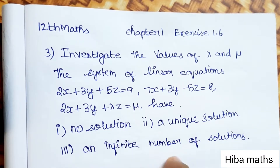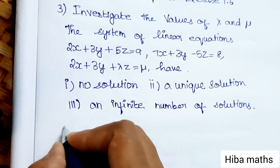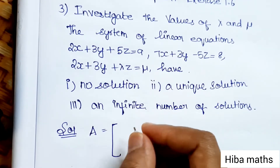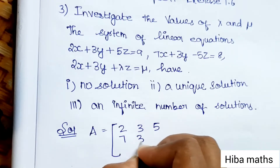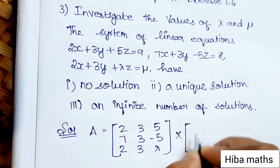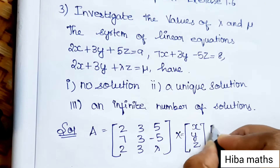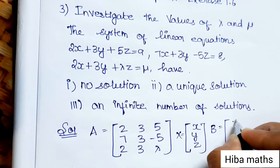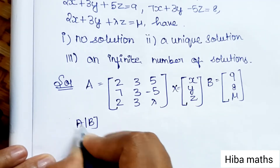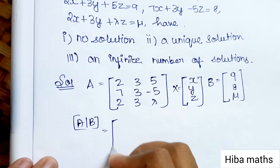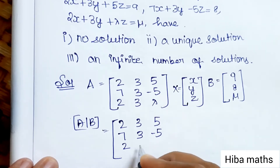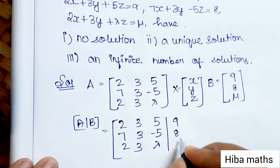Given the system, we write the augmented matrix [A|B]. Matrix A is: row 1: 2, 3, 5; row 2: 7, 3, -5; row 3: 2, 3, λ. And B is equal to 9, 8, ν.